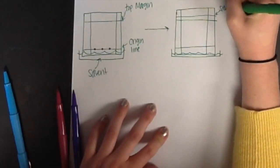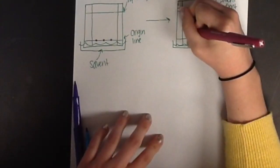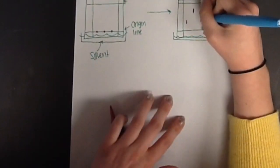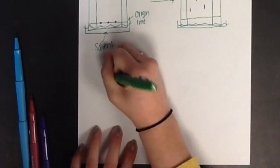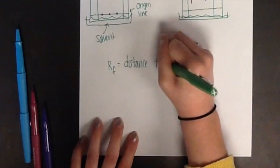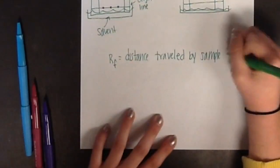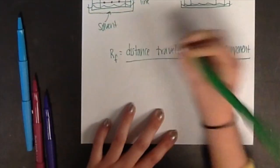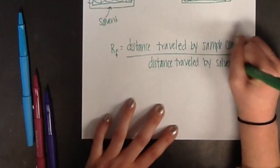The distance each substance travels is measured in centimeters. This data is then used to calculate the RF value, which is the distance traveled by the sample component divided by the distance traveled by the solvent. RF is unitless.